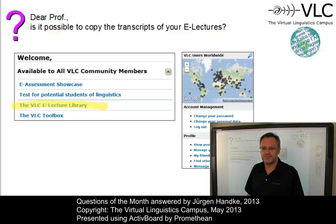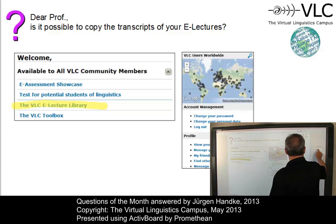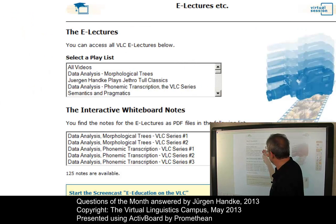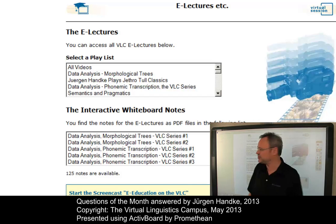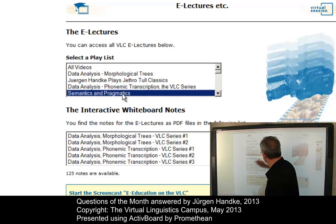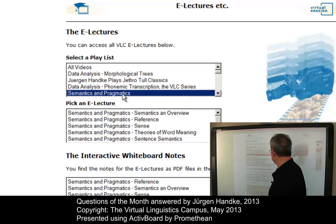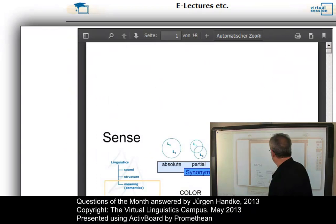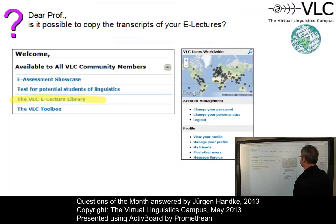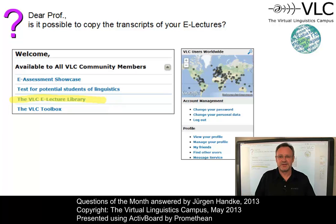A click on this link leads you to the website. Here we are on the Virtual Linguistics Campus, and you see in the box on top all the playlists we have created in our YouTube channel. Once you select any of these playlists, you will see the e-lectures associated with that playlist in the box below. And in the bottom box you will find the interactive whiteboard nodes, which you can load via mouse click. And that is of course ready for printout — these are PDF documents which are available for printout. This provides you with all the information you need about our e-lectures.